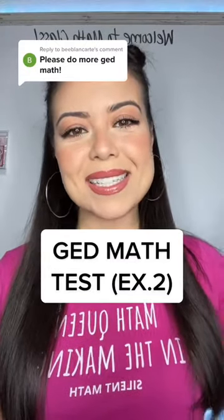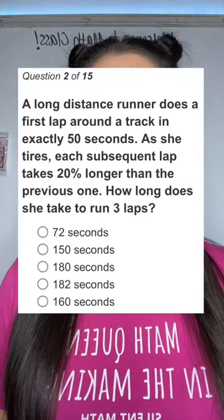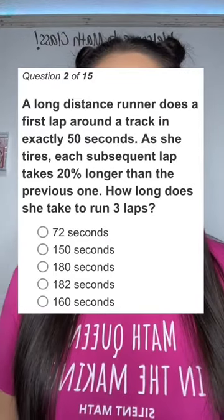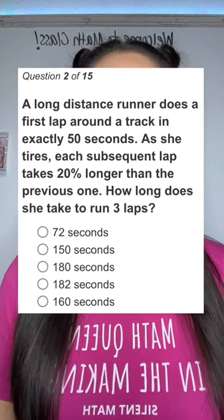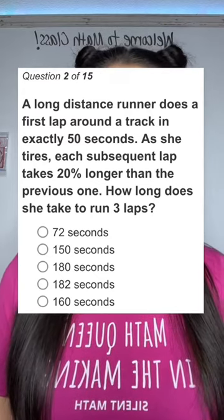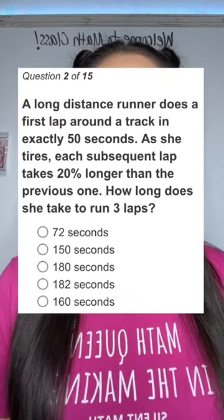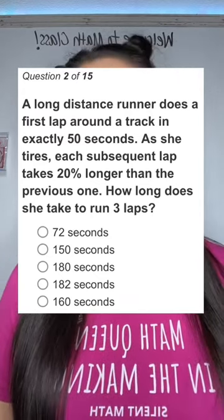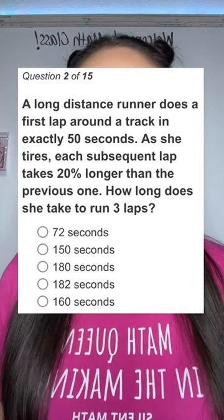GED math test example two. A long distance runner does a first lap around a track in exactly 50 seconds. As she tires, each subsequent lap takes 20% longer than the previous one. How long does she take to run three laps?